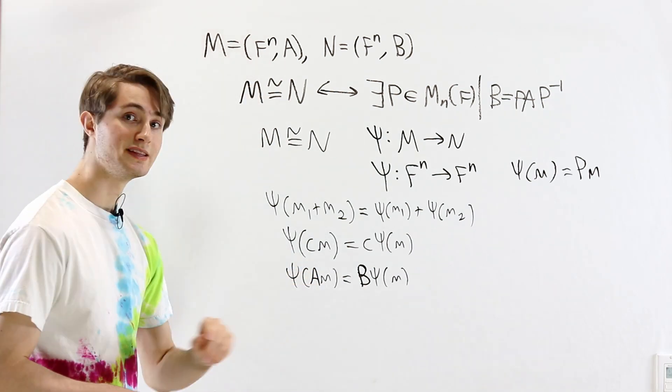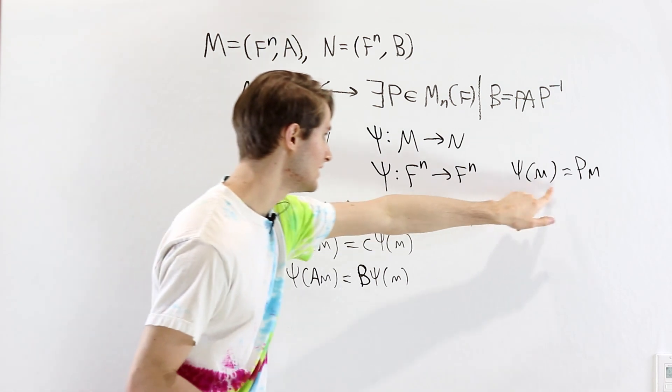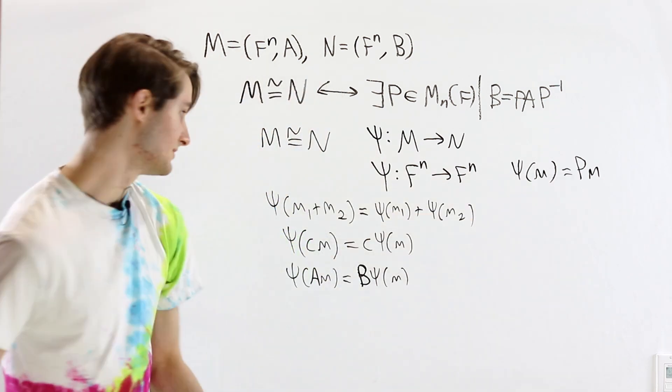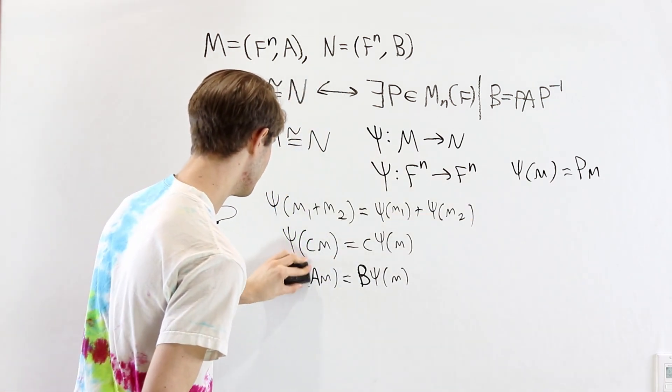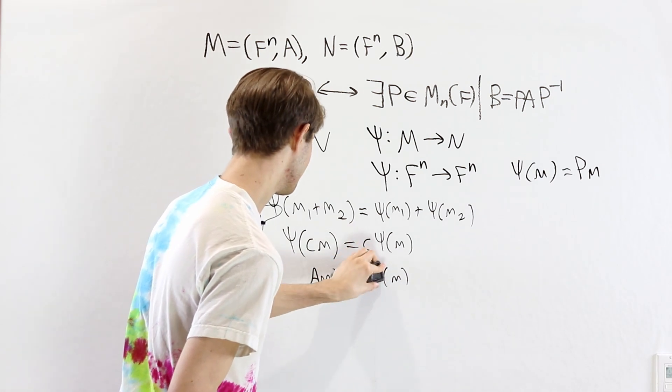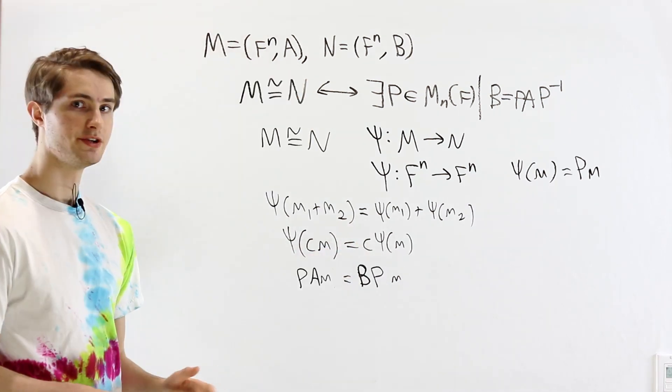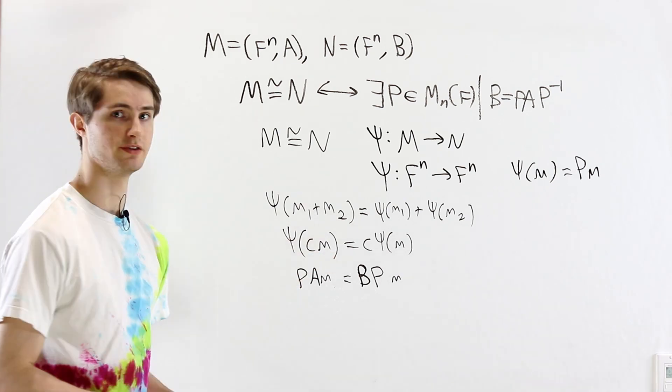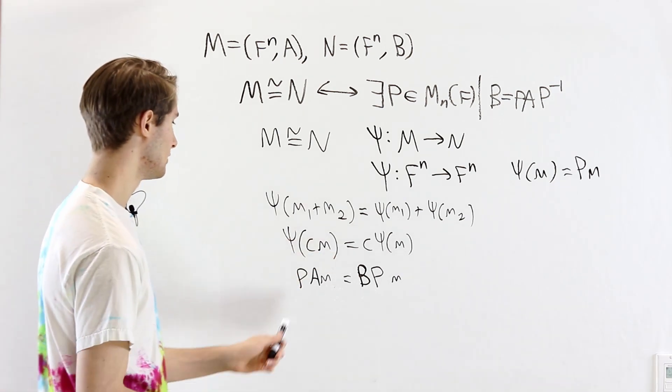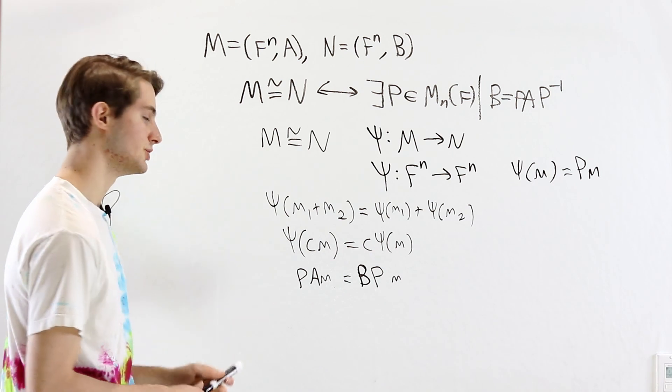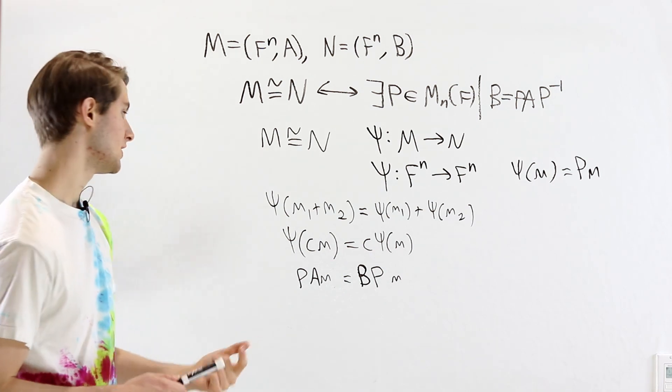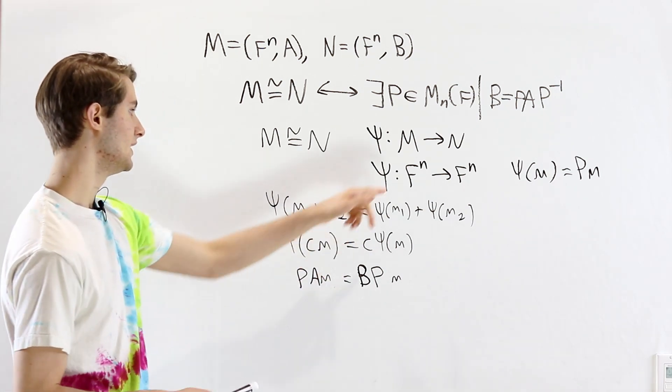And now, we can rewrite this again because we said ψ of m is equal to P times m. So we can replace those two instances of ψ in the equation. So now we have a description that's just in terms of the matrices.